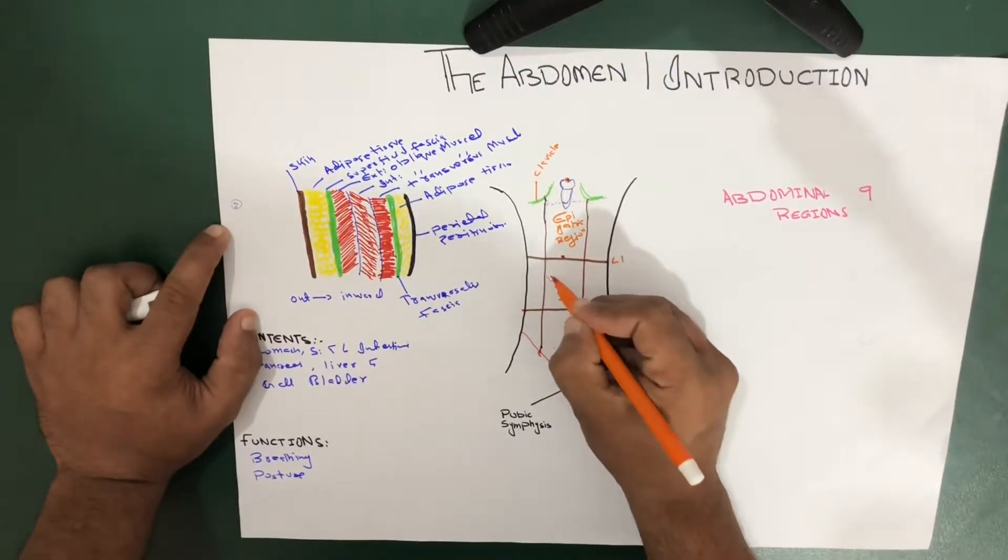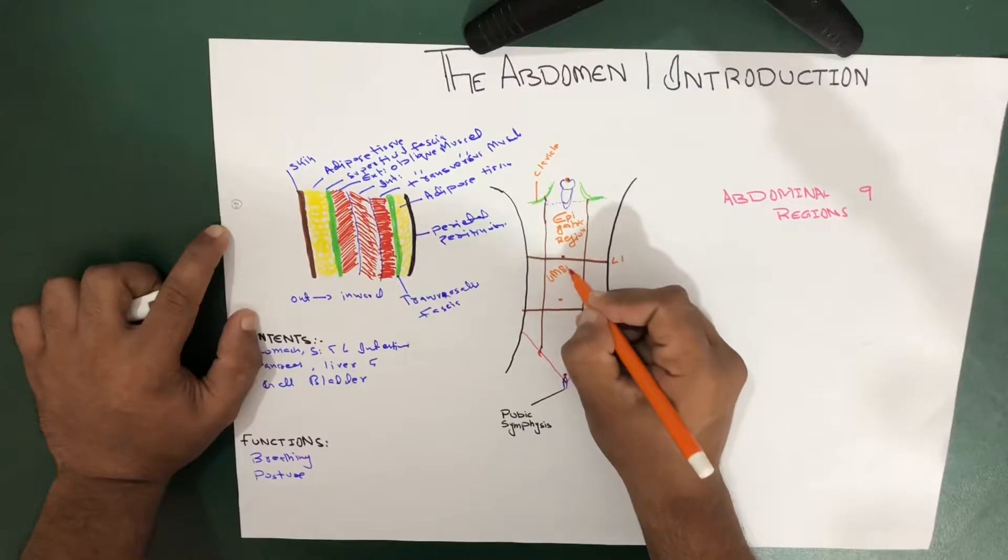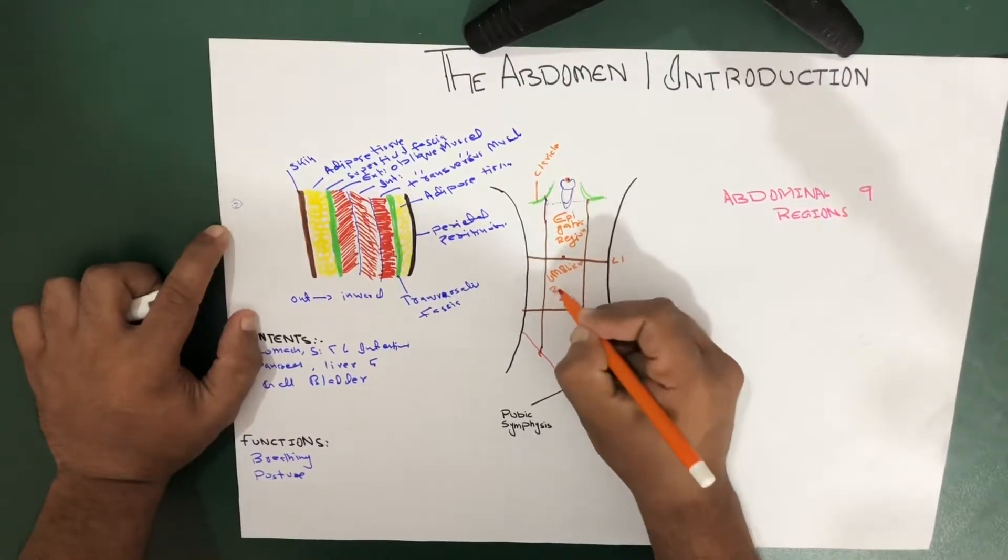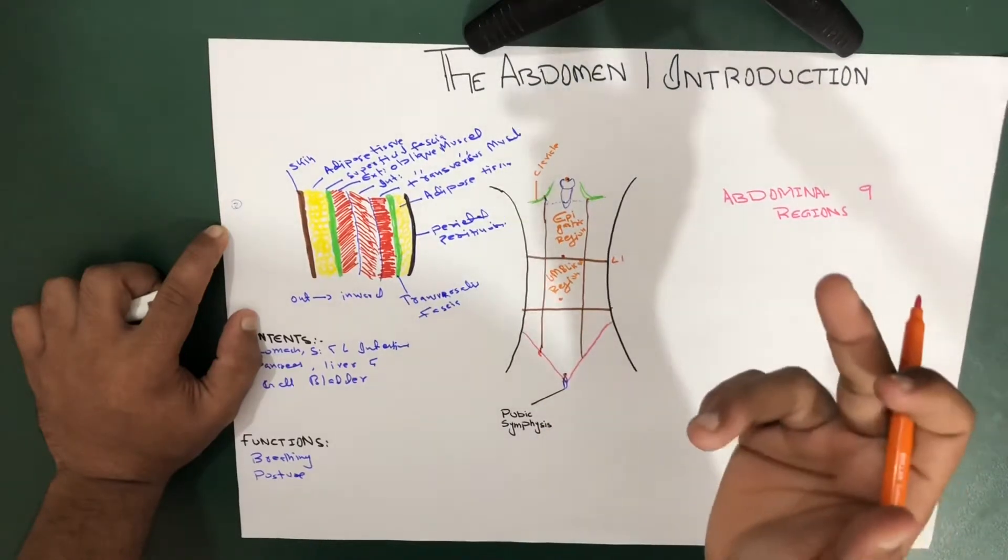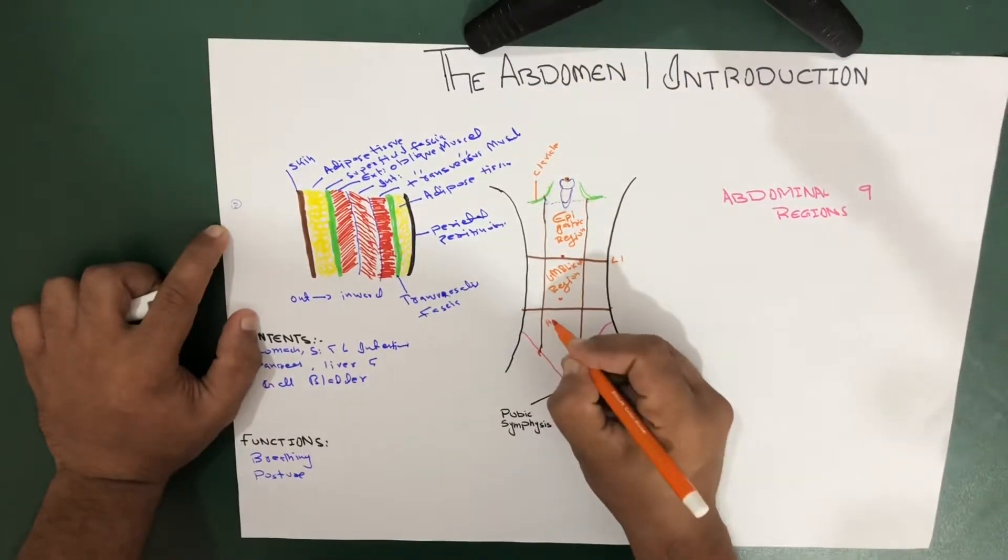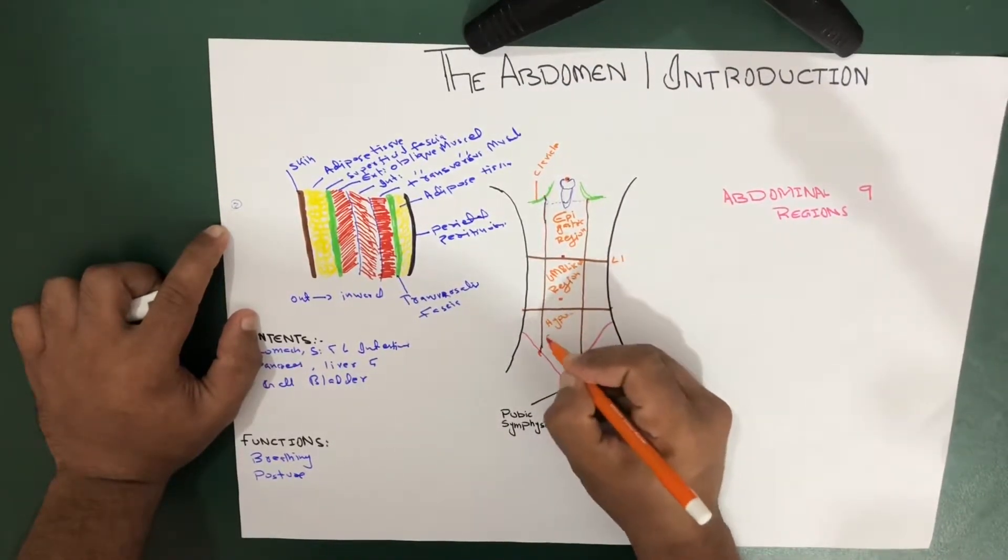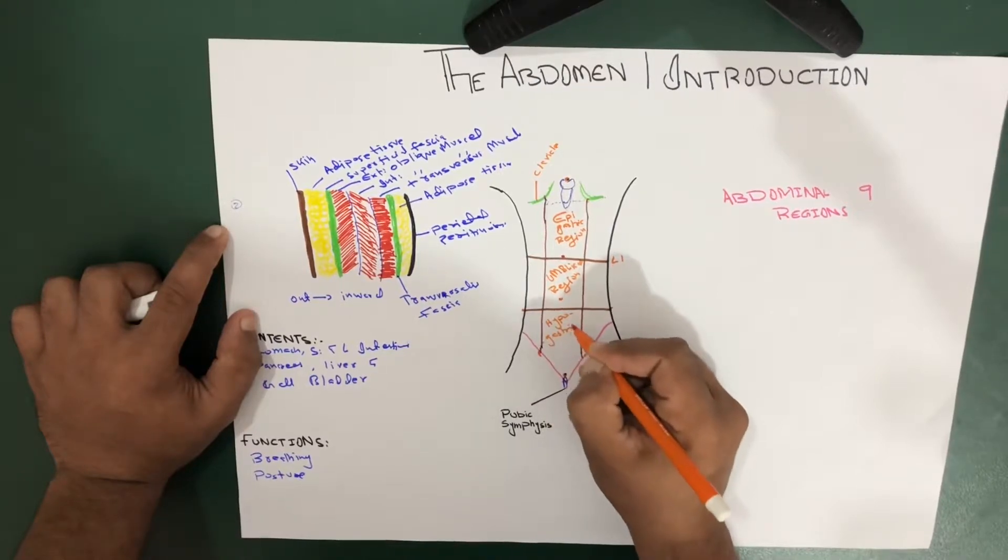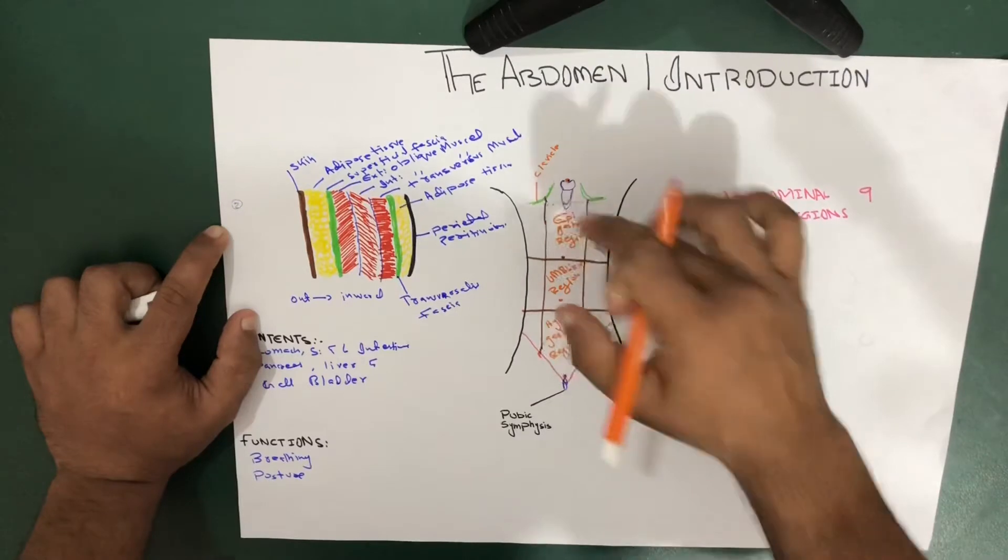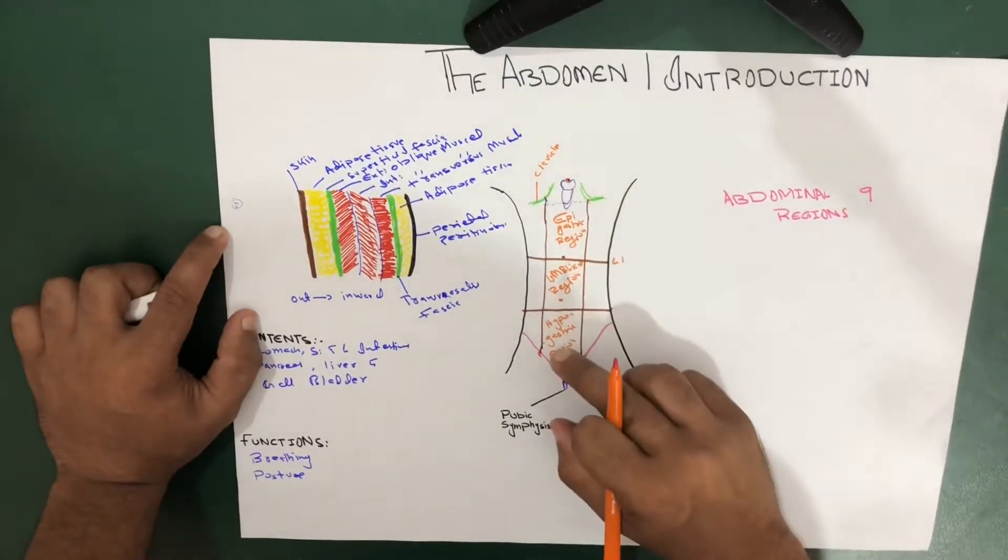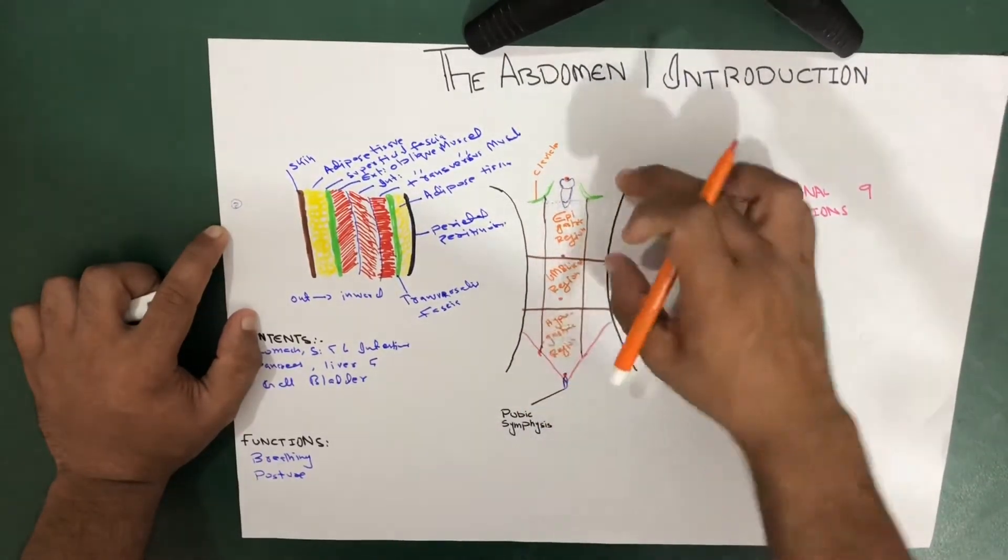It's very easy, and down there, guess it, you guess it right, it's hypogastric region. That's it, epigastric, umbilical region, and the hypogastric region.